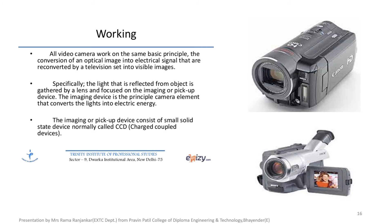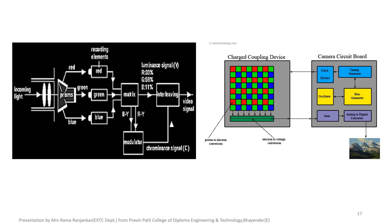The next application is a camera device. All video cameras work on the same basic principle: the conversion of an optical image into electronic signal data, which is then converted by a video interface into a visible element. Specifically, the light reflected from the object is gathered by a lens and focused on the imaging or pickup device. The imaging device is the physical camera element that converts light into an optical image, and it consists of small solid-state devices normally called CCD — Charge Coupled Device.